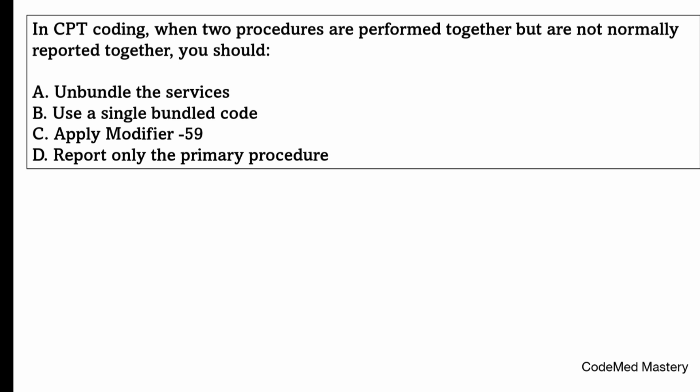The correct answer for this question is option C. Modifier 59 is used to indicate that two procedures are distinct and unrelated, preventing unbundling errors when services that typically bundle together are performed separately.